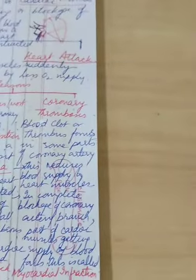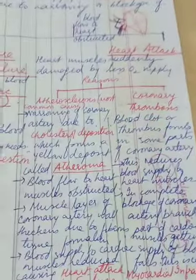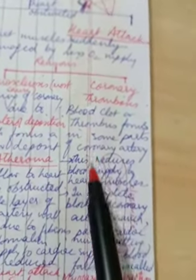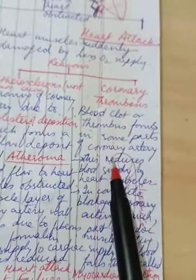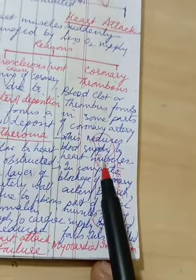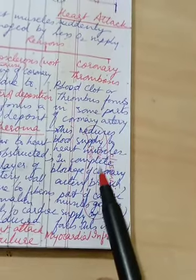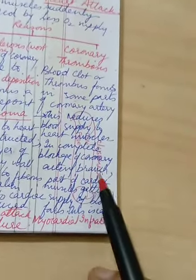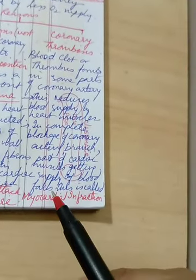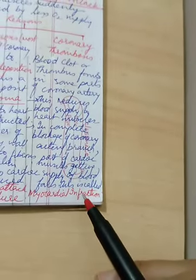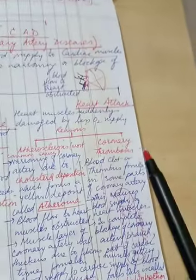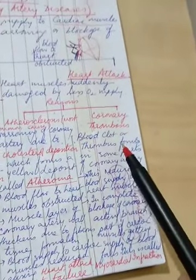And finally what we call as coronary thrombosis. This is a situation where we can talk about a blood clot or a thrombus that is formed in some parts of the coronary artery. And if a clot is formed what will happen this will reduce the blood supply to heart muscle. Naturally it will reduce it and in complete blockage of artery branch the part of cardiac muscles gets getting supply of blood they fail and this is called as myocardial infarction.